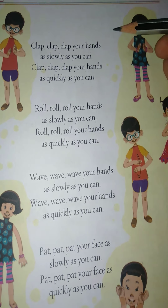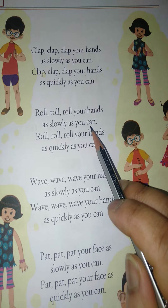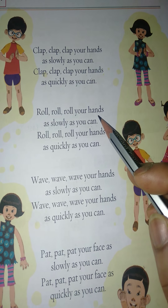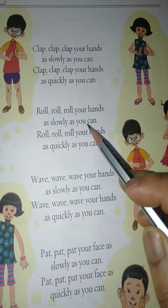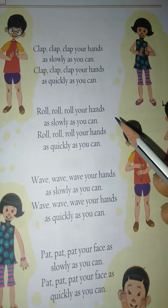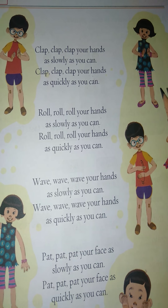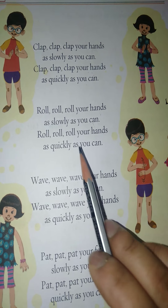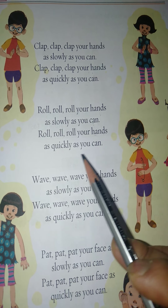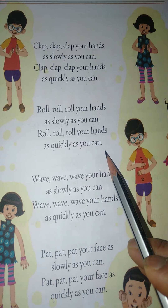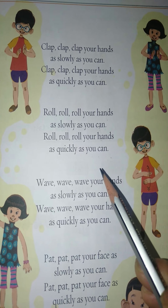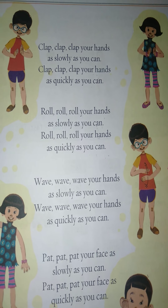Then in the second stanza he says: roll, roll, roll your hands as slowly as you can. And then: roll, roll, roll your hands as quickly as you can — as fast as you can.